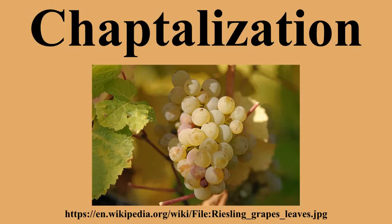In warmer regions where over-ripening is a concern, the opposite process of rehydration and acidification is used. This is used in jurisdictions such as areas of California, where if the must has excess sugar for normal fermentation, water may be added to lower the concentration. In acidification, tartaric acid is added to the must to compensate for the high levels of sugar and low levels of acid naturally found in ripe grapes. In champagne production, measured quantities of sugar, wine, and sometimes brandy are added after fermentation and prior to corking in a process known as dosage.